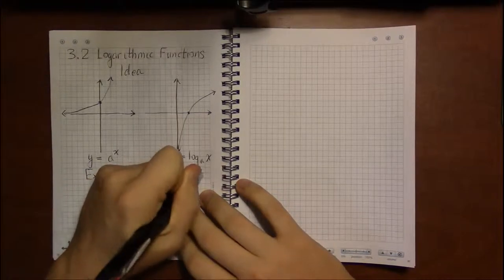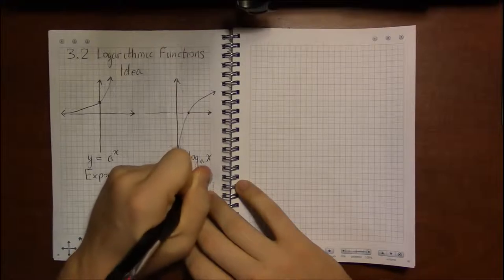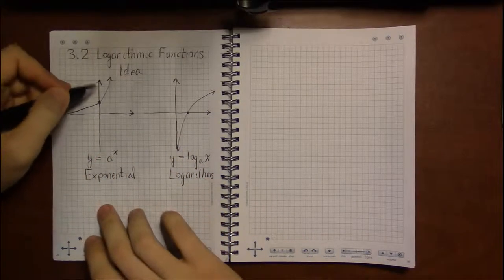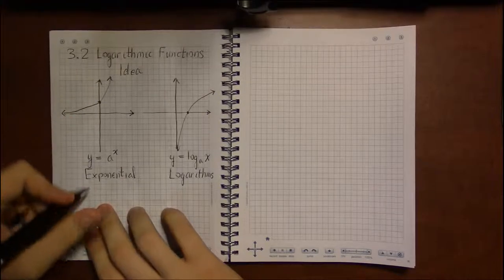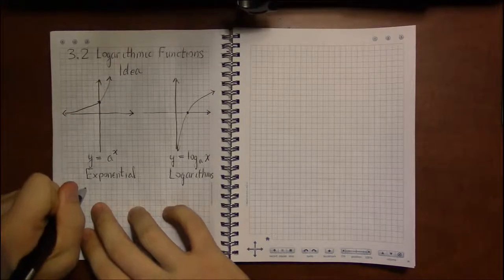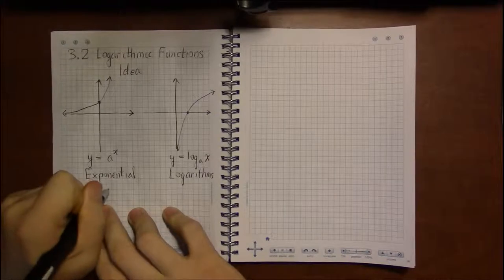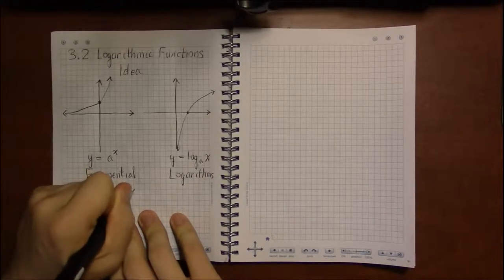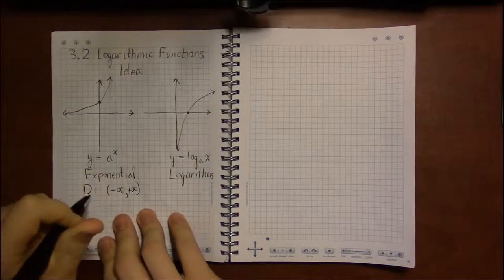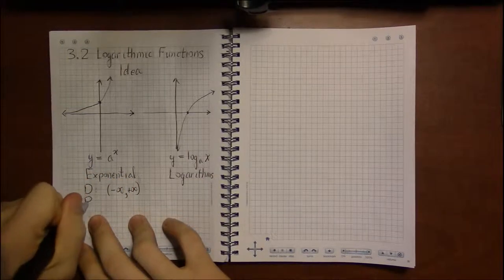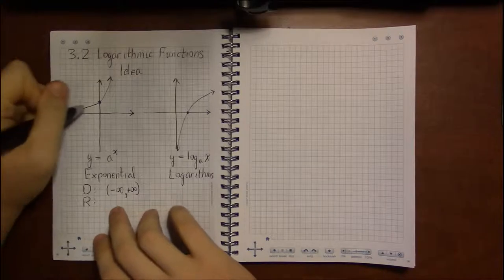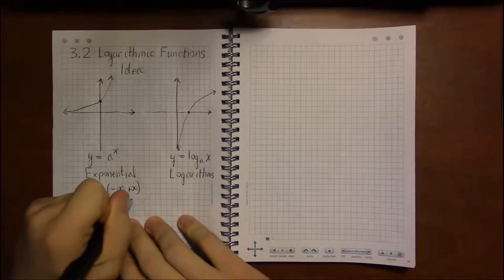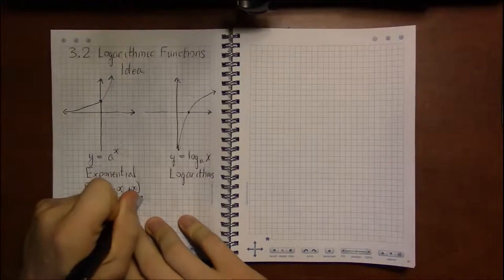And so their graphs are somewhat related to one another. Whereas here, with exponential functions, we have a domain of all real numbers, or minus infinity to infinity, and a range of all positive real numbers, from zero to positive infinity, not including zero.